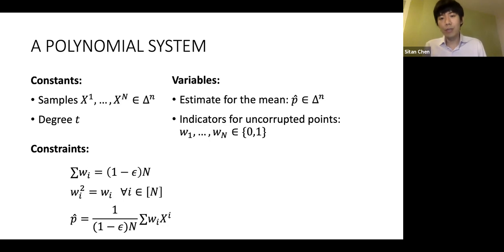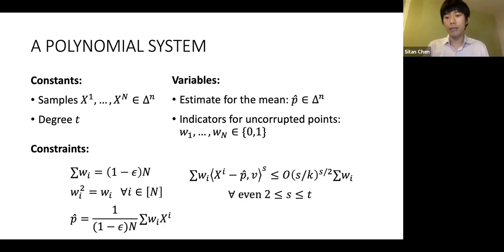By definition, p-hat should be the empirical mean of the subset I've picked out using the w's. Now we arrive at the most interesting constraint in the system, which is this moment bound I mentioned. I want my w_i's to select a subset such that if I project that empirical distribution in any L∞ bounded direction v, then the resulting projected distribution should have a sub-gaussian moment bound as follows.